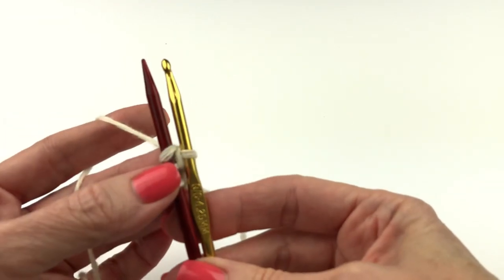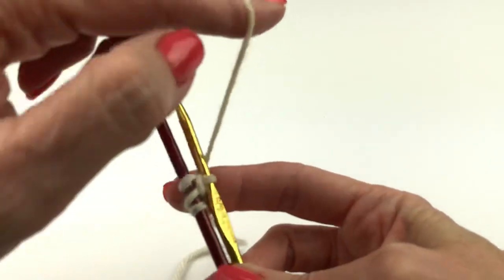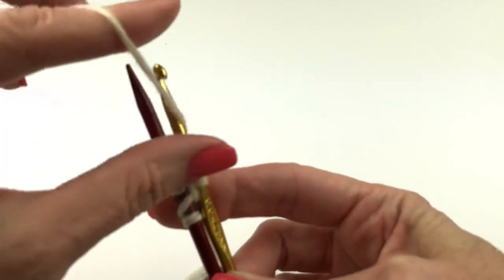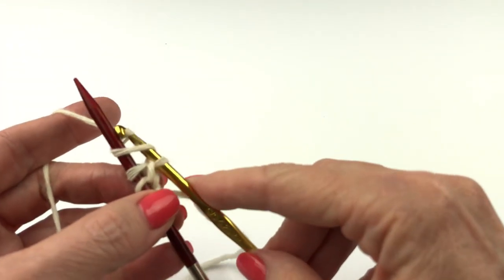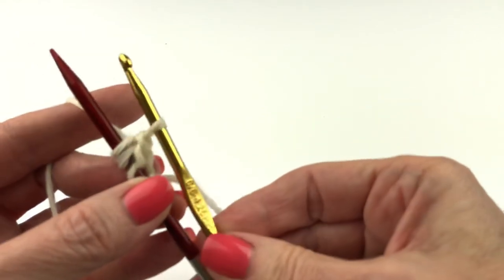Now every subsequent stitch is going to be made this way. We throw around and around and land in between and to the back and then just draw down with the crochet hook.